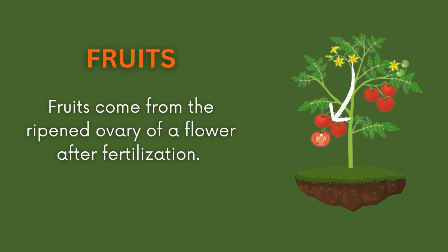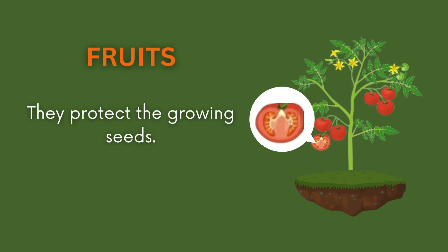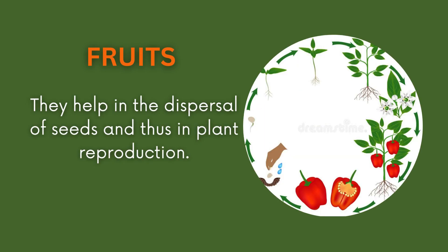Fruits come from the ripened ovary of a flower after fertilization. They protect the growing seeds and help in the dispersal of seeds, and thus in plant reproduction.